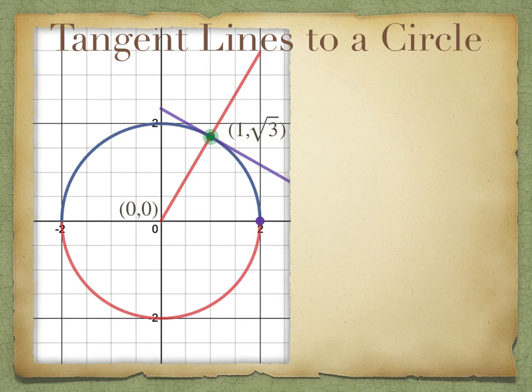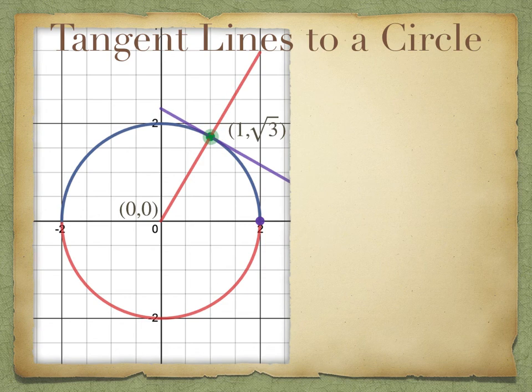we are asked to find the equation of the tangent line to this circle at this point, which is the purple line. Using some information we have known, like on a circle the tangent line will be perpendicular to the secant line that goes through the same point and the center, which is the red line in this case.